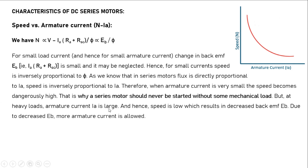At heavy loads, armature current Ia is large, and hence speed is low, resulting in a decreased back EMF Eb. So the speed versus armature current characteristic of the series motor is: N is directly proportional to 1/Ia — a hyperbolic curve, quite the opposite of the shunt motor.